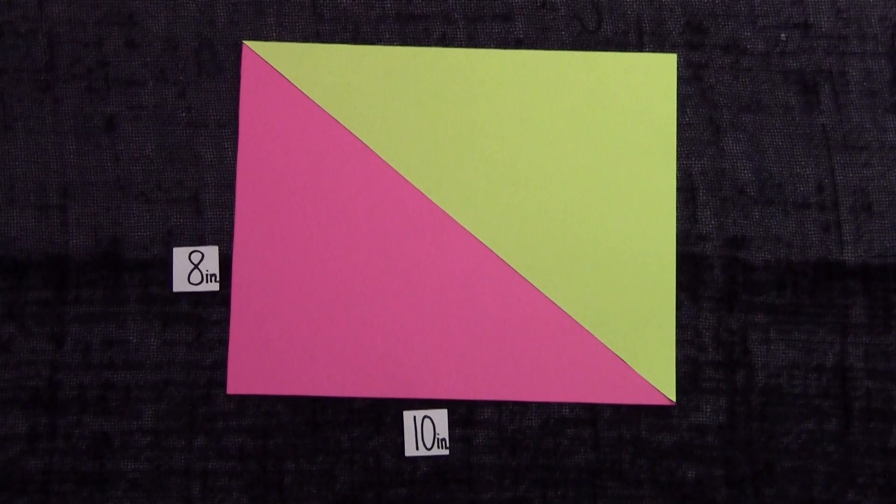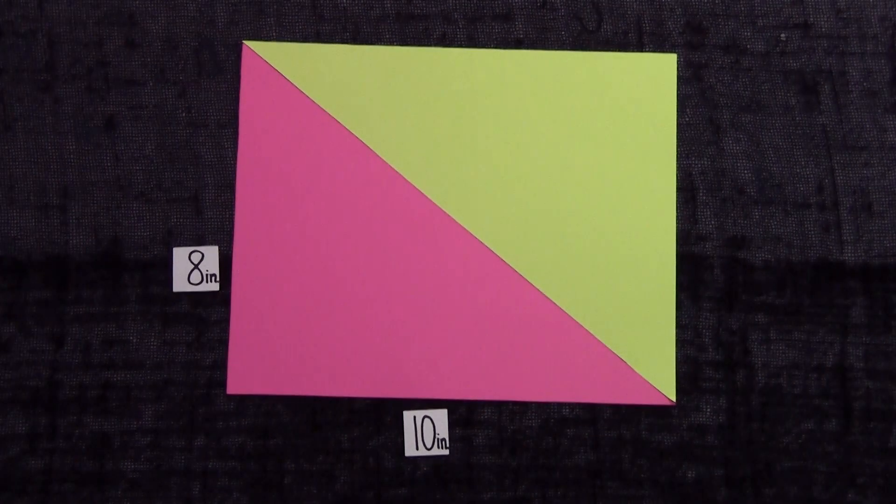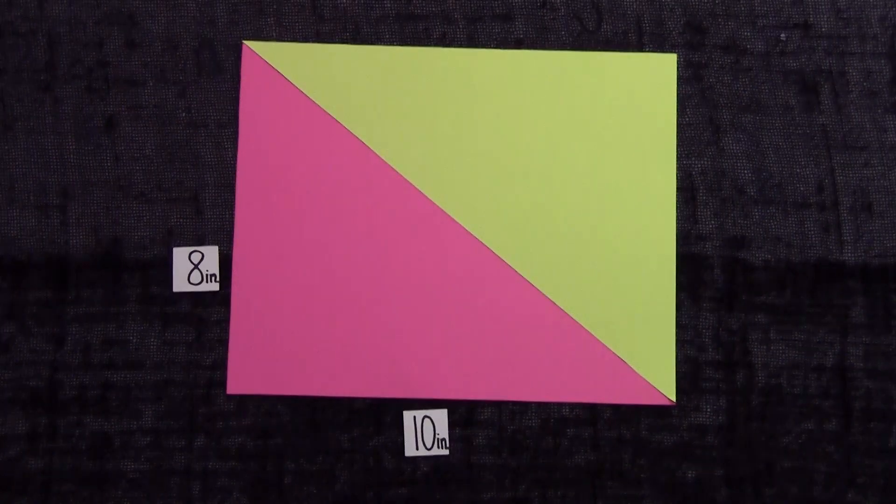There it is! The 1 half from the formula of area of a triangle. Area equals 1 half base times height.